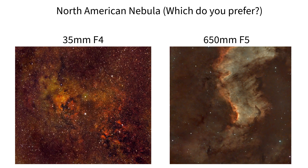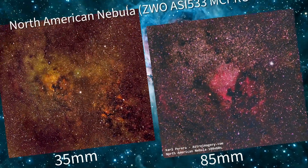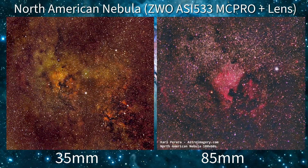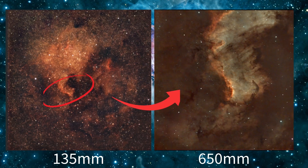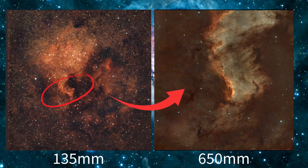Ever wondered how the North American Nebula would look at different focal lengths, from a wide 35 millimeter lens to a 650 millimeter telescope? I've spent considerable time recently capturing this nebula with four different setups, and one of these focal lengths gave me a result I never expected. By the end of this video you'll know exactly which lens or telescope is right for your deep sky astrophotography when taking images of nebulae like the North American Nebula, which is actually a very large nebula.